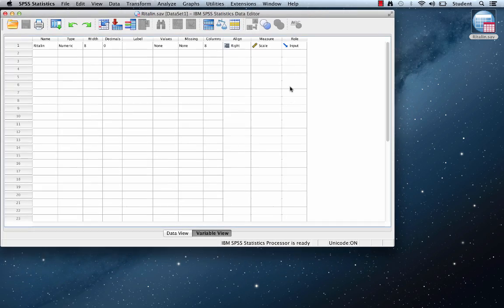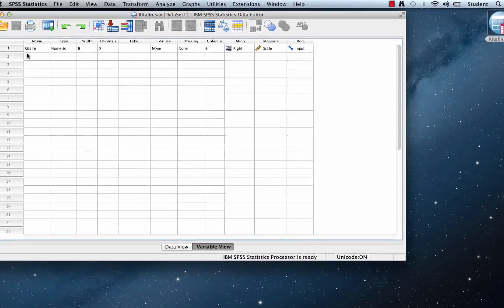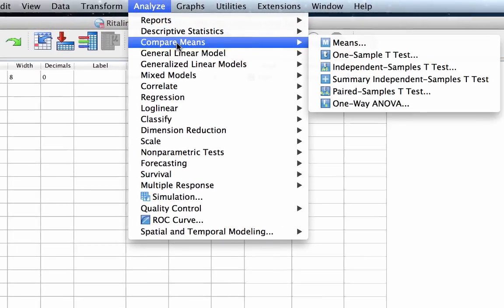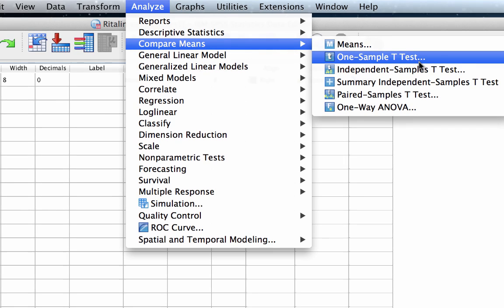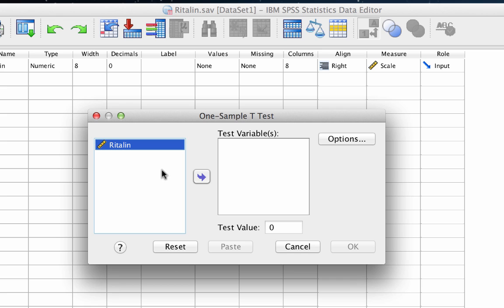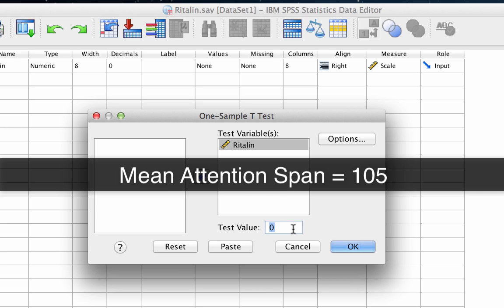Here in SPSS, we are using the Ritalin.sav dataset. Go to Analyze, Compare Means, One Sample T-Test. Now the only variable that we have available is Ritalin. So move Ritalin into Test Variables window. Now here is something very important. We have to tell SPSS what is our comparison value. And in this case, the comparison value is the mean attention span of ADHD children without Ritalin, which we have already established is 105.